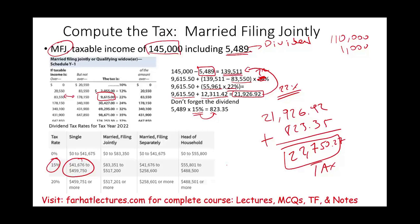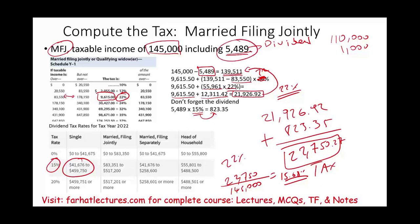The marginal tax rate for this individual is 22%. The average tax rate is total taxes divided by total income: $22,750 divided by $145,000, which equals approximately 15.68%. That's less than 22% because that's your highest bracket, and you paid only 15% on the dividend portion — so 15.68%, not bad at all.